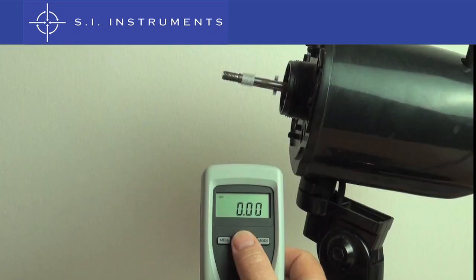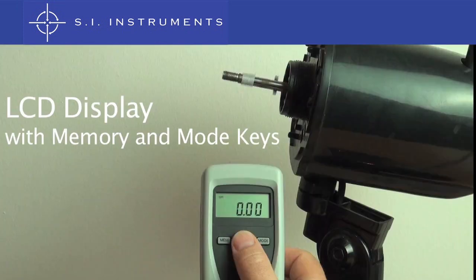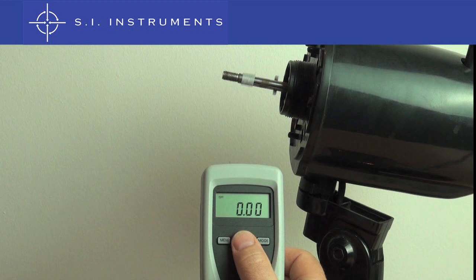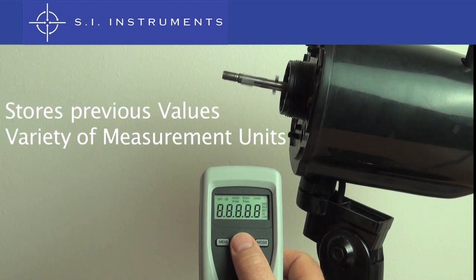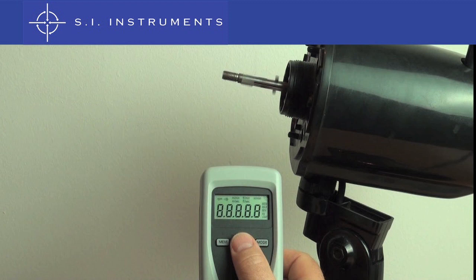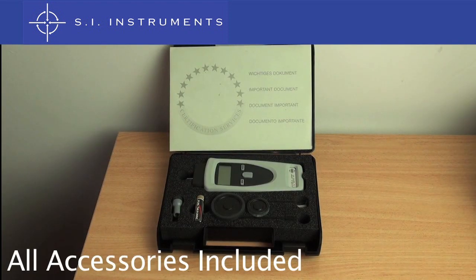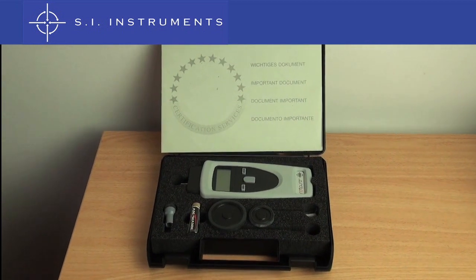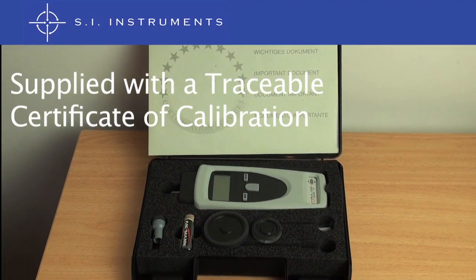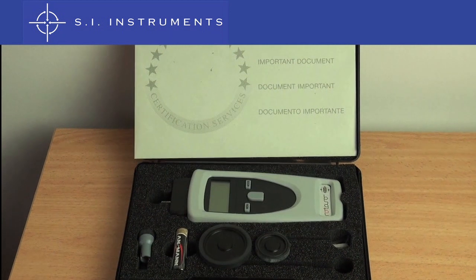These measurements can be read off the LCD display while the memory and mode keys allow you to access stored values and measure in a variety of engineering units. Each tachometer is supplied with all the accessories in a protective carrying case and is supplied with a NATA traceable calibration certificate validating its accuracy.